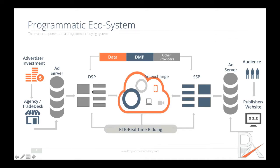There are also other providers connected to both the DSP and the SSP, such as brand safety or brand verification technology. On the SSP side, these are the publishers — ESPN, BuzzFeed, and so on — and they are connected to their own ad server. The SSP handles the selling of publisher inventory, and both sides meet in the middle to buy and sell through data, DMPs, and other technology providers.